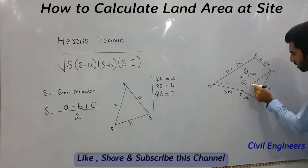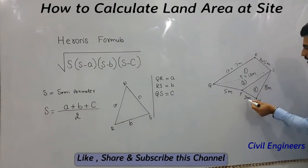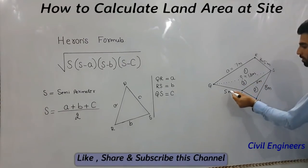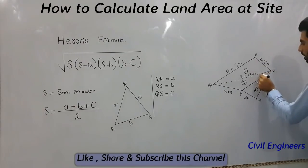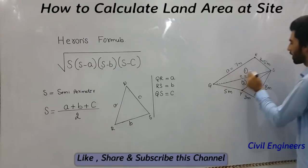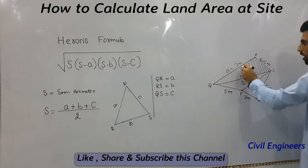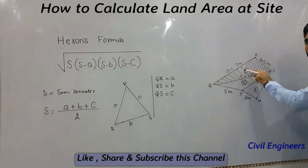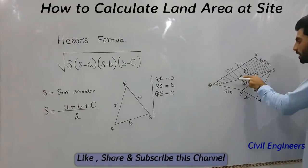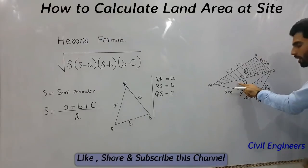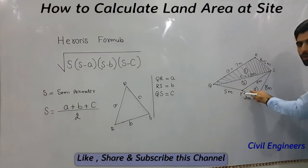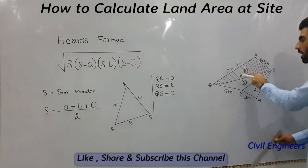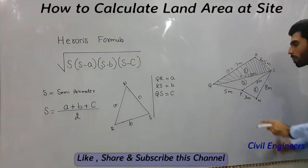For the third triangle, we have 8, 3, and for example 6 meters. For the second triangle, the value is also 6 meters. To find out the area, we calculate the first triangle using Heron's formula. You can use the same formula for the second and third triangles as well. By adding these three triangle areas together, you get the total area of the close traverse.